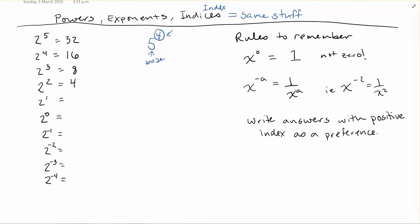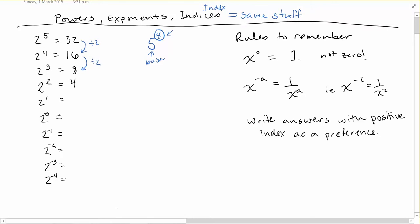We're going to start looking at negative indices. But let's remind ourselves how this works. Looking at this pattern: 2 to the power of 5 is 32, 2 to the power of 4 is 16, 2 to the power of 3 is 8, 2 to the power of 2 is 4. How are we getting between one and another? We divided by 2 each time. Following that pattern, 4 divided by 2 gives us 2, and 2 to the power of 1 is 2.